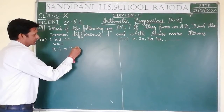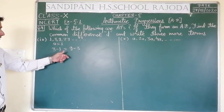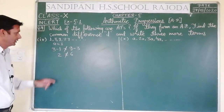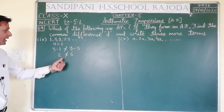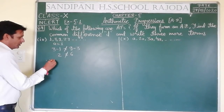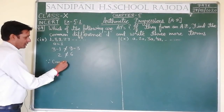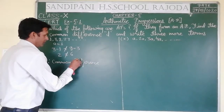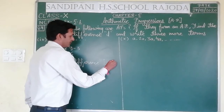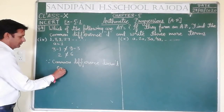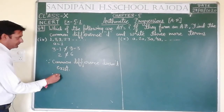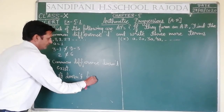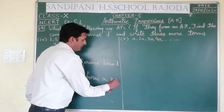We check if (2nd term − 1st term) equals (3rd term − 2nd term). Here, 3 minus 1 is 2, and 9 minus 3 is 6. These are not equal, so the common difference does not exist. Therefore, it does not form an AP.